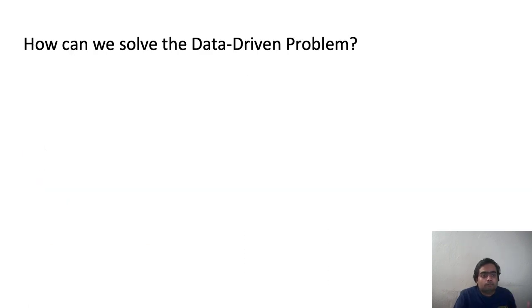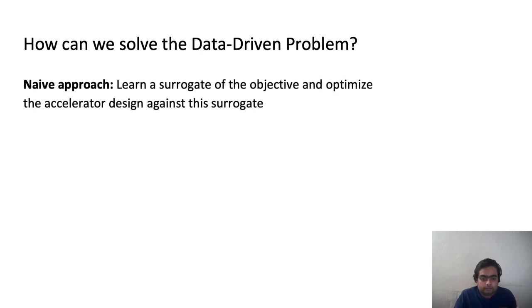Okay, so how do we solve this data-driven optimization problem? A naive approach here, which is the first approach that comes to mind, is that you could train a surrogate of the optimization objective. So in this case, the latency, and then optimize the accelerator against this learned model. So you train a neural network model that can predict latency for a given accelerator, and you optimize against it.